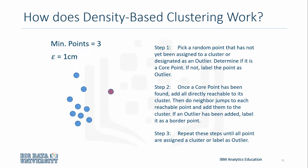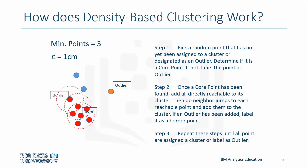Density-based clustering works by picking a random point that does not belong to a cluster or is an outlier, and determines if that point is a core point. If not, label it as an outlier. Now pick another point at random and determine if it is a core point. If it is, then all of the directly reachable nodes are assigned to the cluster.